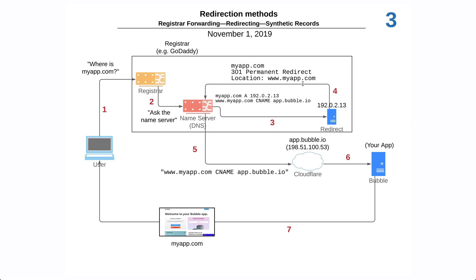What you'll be doing is create a www.myapp.com CNAME record that points to app.bubble.io, which directs to our Cloudflare network. The difference here is that you'll also be creating a forward, redirect, or synthetic record that stays on your registrar and redirects the bare domain myapp.com to www.myapp.com.